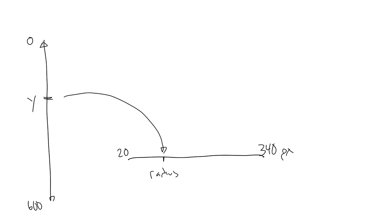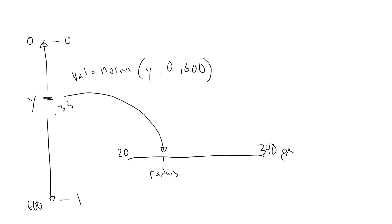Well, if we do a Normalize on the mouse position — val equals norm(Y, 0, 600) — that gives us a number from 0 to 1 that represents the Y position of the mouse: 0 at the top of the screen and 1 at the bottom. Then we do a Lerp on that value using the radius range, so we say Lerp(val, 20, 340), and that gives us the radius that corresponds to the mouse position.